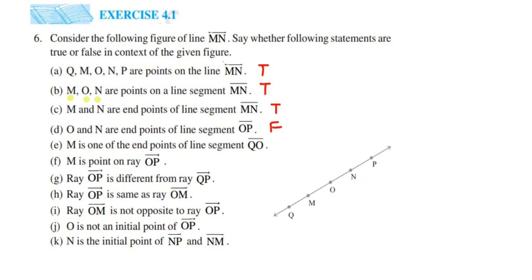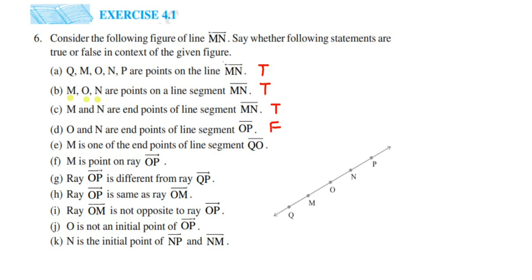The next statement is: M is one of the endpoints of line segment QO. The statement is false. You can see that M is somewhere in between Q and O, not at an endpoint. An endpoint means there should be no points or line extending from that side. So the statement is false.